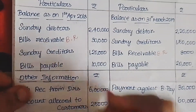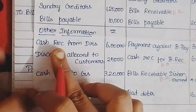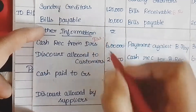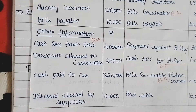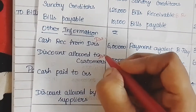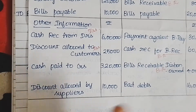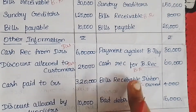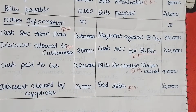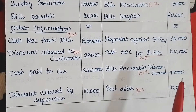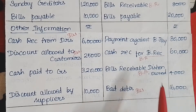Total debtors information: sundry debtors opening balance goes to the debtors account. Sundry debtors closing balance goes to the debtors account. Cash received from debtors goes to the debtors account. Discount allowed to customer goes to the debtors account. Cash paid to creditors — this is the creditors account. Discount allowed by supplier goes to the total creditors account. Payment against bills payable goes to bills payable. Bad debts and bills receivable dishonored go to the debtors account. Bills receivable dishonored is also in the debtors account on the debit side. This is the total debtors account.